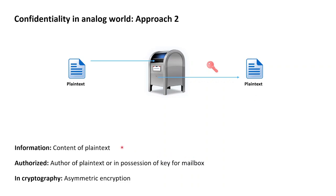Again, what is the information in this approach? The information is still just the content of the plaintext. To be authorized means to be the author of the plaintext or to be in possession of the private key for the mailbox. Once we go into cryptography, we will get to know asymmetric encryption. When we reach asymmetric encryption, remind yourselves of this mailbox approach, as asymmetric encryption on a conceptual level works very similar to making use of mailboxes.